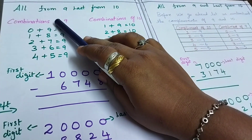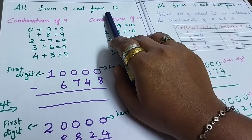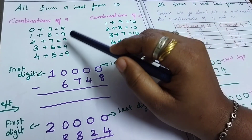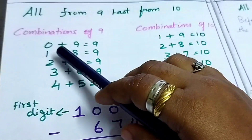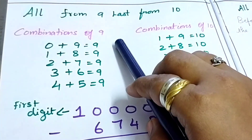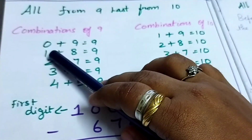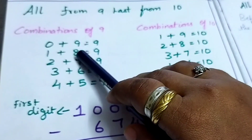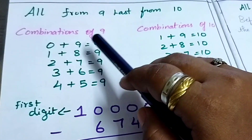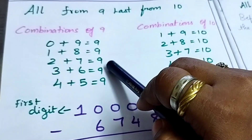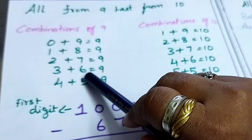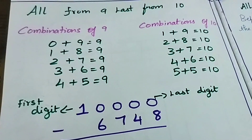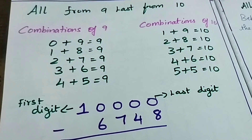So the method is all from 9 and last from 10. Before moving to the content, from your earlier classes you have learnt the combinations - the combinations of 9. With 0, what number will you add to get 9? 9. So 1 plus what number will you add to get 9? 8. 2 plus 7 is equal to 9. 3 plus 6 is equal to 9.